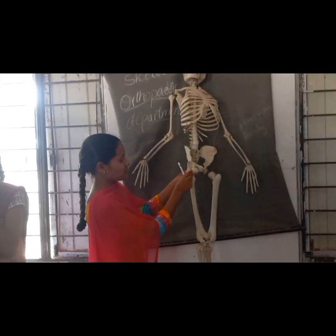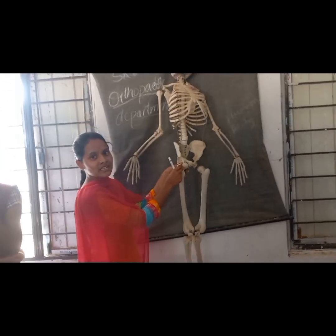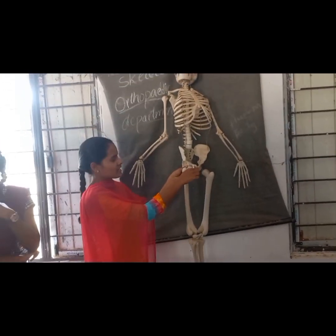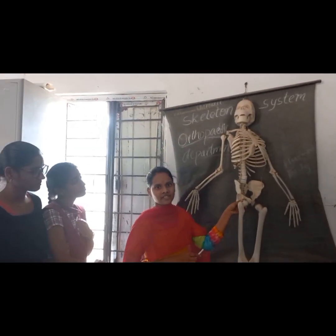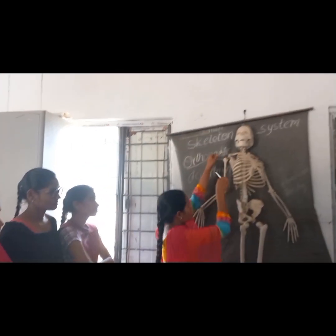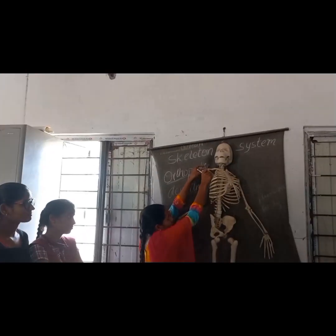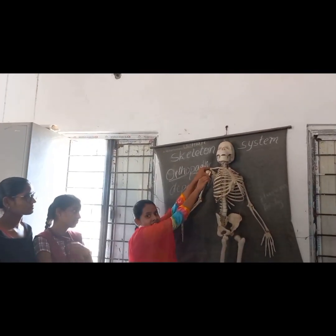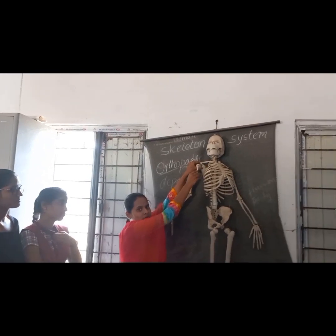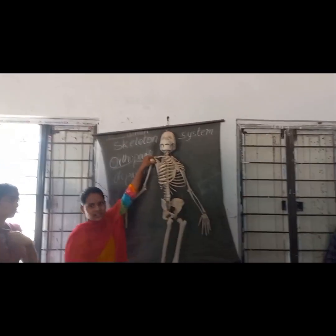This is the hip joint. The hip joint is an example of a ball and socket joint. And the shoulder joint is also an example of a ball and socket joint.